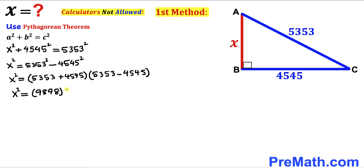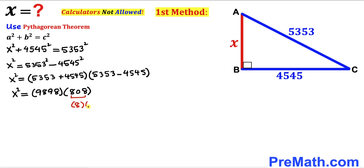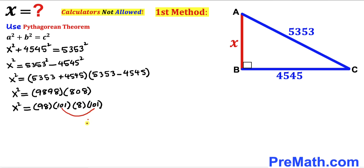Now let's tweak these numbers. We observe that 9898 can be written as 98 × 101, and likewise 808 can be written as 8 × 101. So we can write x² = 98 × 101 × 8 × 101, and we notice that 101 × 101 = 101².